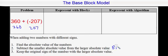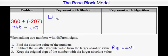Step 2 is to subtract the smaller absolute value from the larger absolute value — meaning take the number that was bigger and subtract off the smaller one after you took the absolute value. So 360 is bigger and 207 is smaller, so I now need to take 360 and subtract off 207, which I will do using blocks.